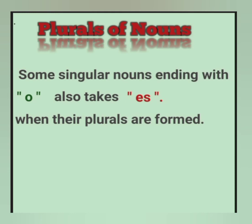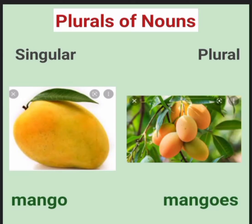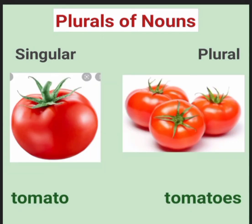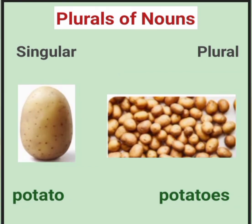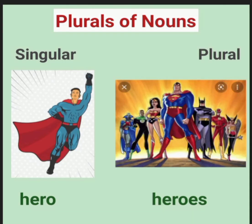Some singular nouns ending with O also take ES when their plurals are formed. Mango, mangoes. Tomato, tomatoes. Potato, potatoes. Hero, heroes.